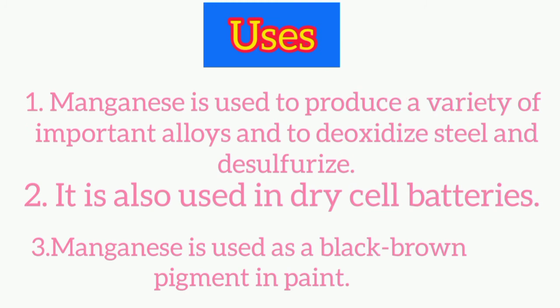Now let's see its uses. First, manganese is used to produce a variety of important alloys and to deoxidize steel and desulfurize. Second, it is also used in dry cell batteries.